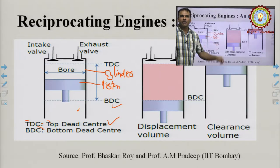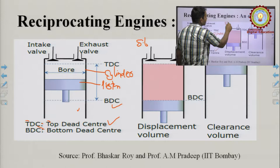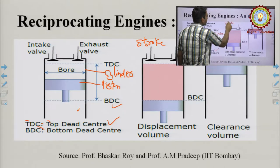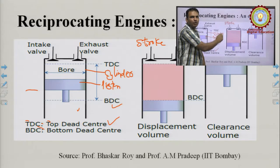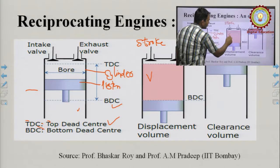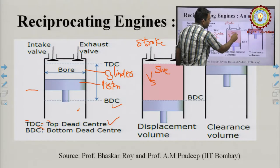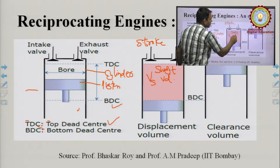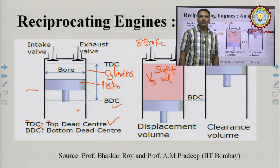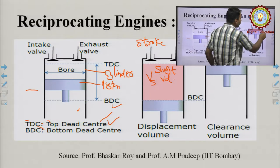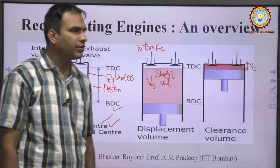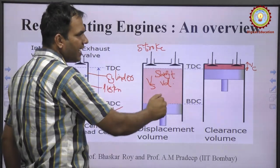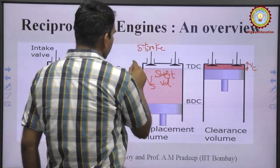When the piston moves from BDC to TDC or from TDC to BDC, the movement is called a stroke. The volume swept by the piston as it moves is called swept volume V_s. When the piston reaches the TDC position, the volume remaining inside the cylinder is called clearance volume V_c.